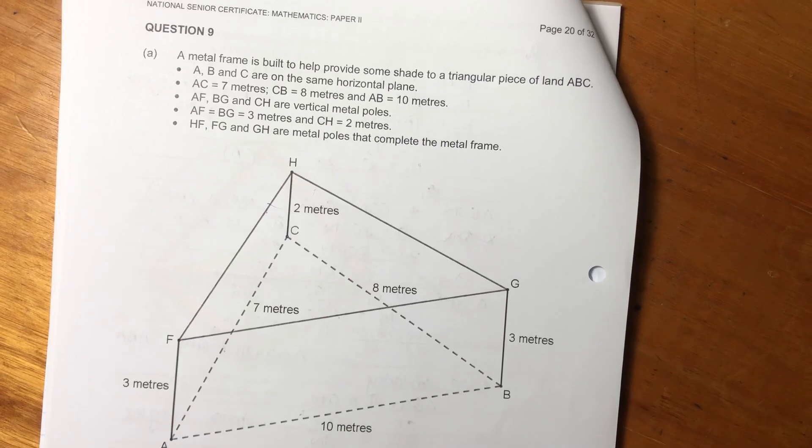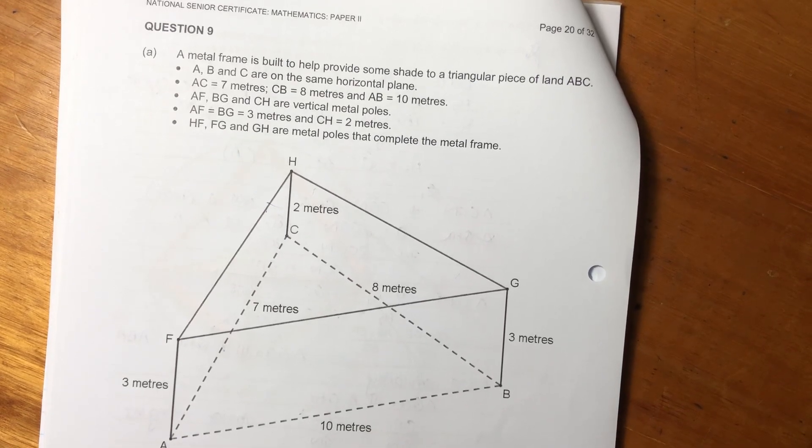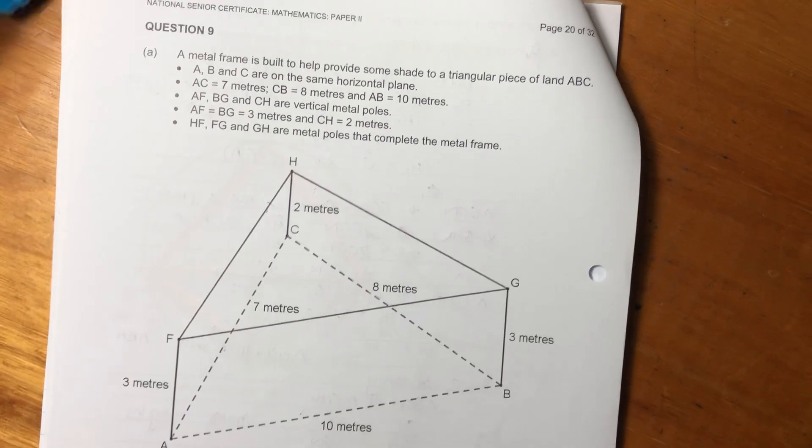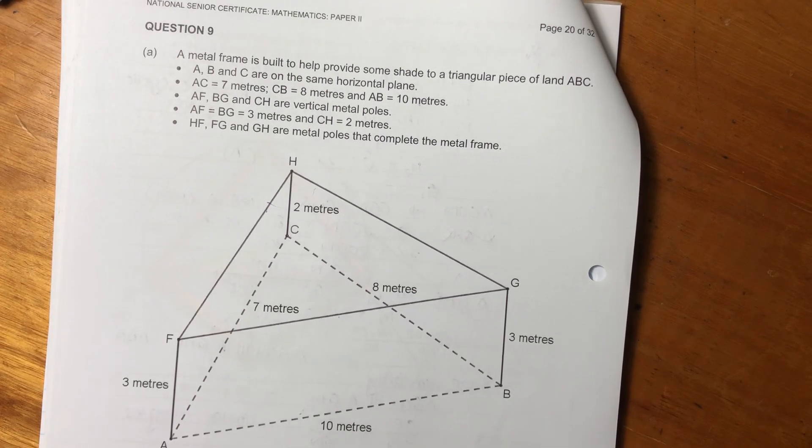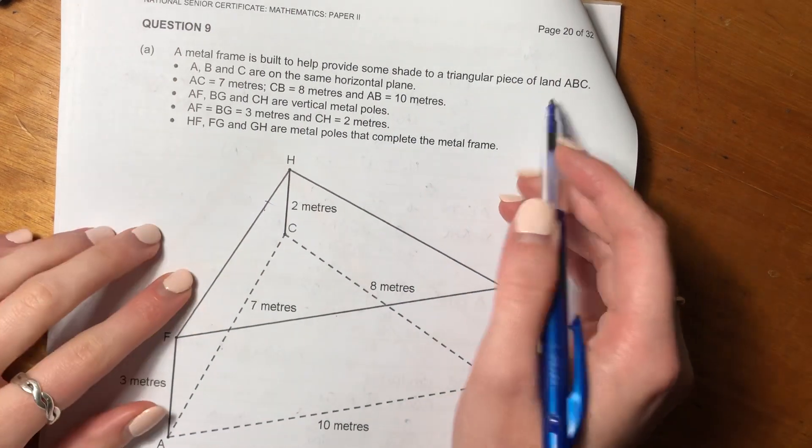Hey guys, so we are back with our geometry. We're moving on to question nine. It says a metal frame is built to help provide some shade to a triangular piece of land, ABC.